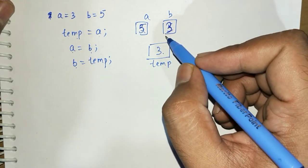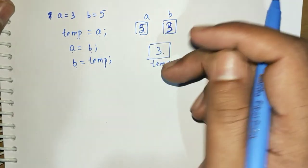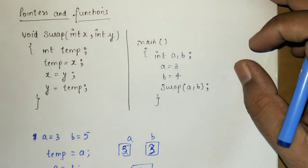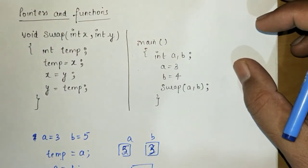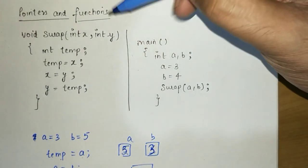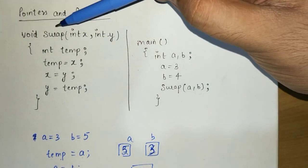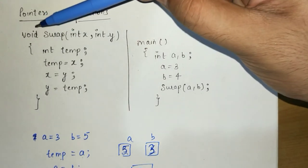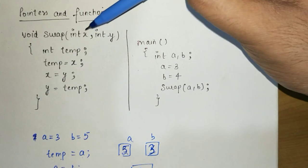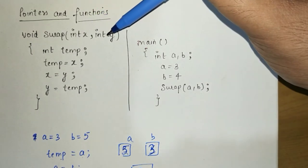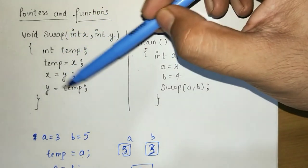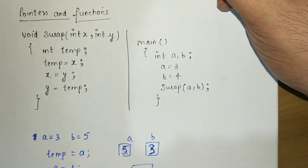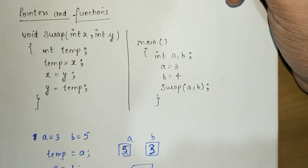Now let's see what happens if I create a function to swap variables. I've created a function with return type void because I don't need to return anything — I just need to swap two variables. The parameters are int x and int y, and the same three-line swapping algorithm is inside. It looks pretty good to swap any variables.